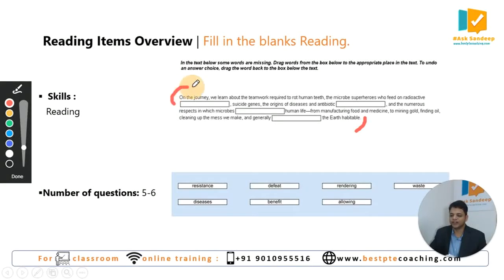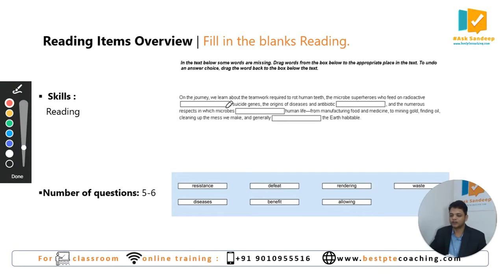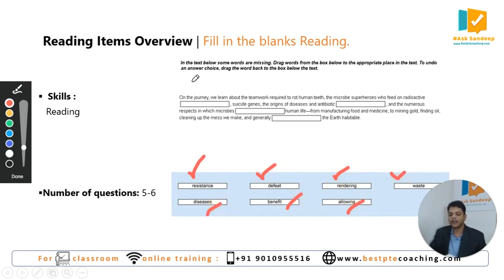You are given a paragraph in this question type, and in the paragraph you can see some blanks. These blanks do not have any dropdown buttons — there is no dropdown. The suitable choices are at the bottom; you can see these choices.